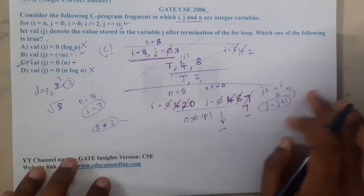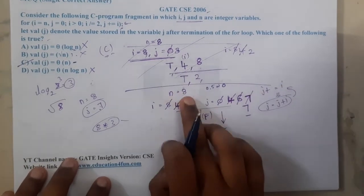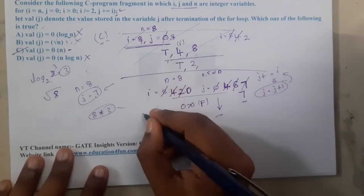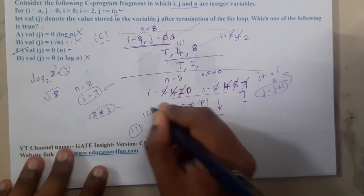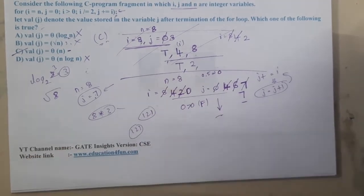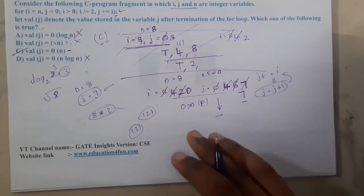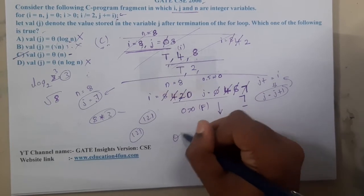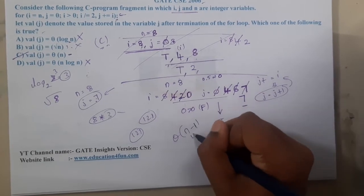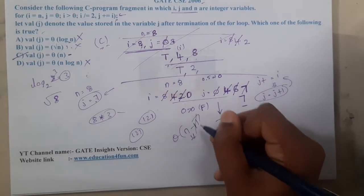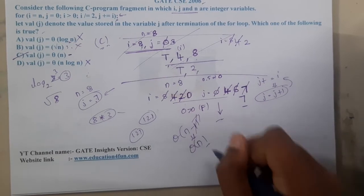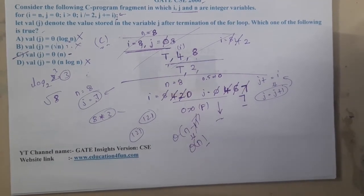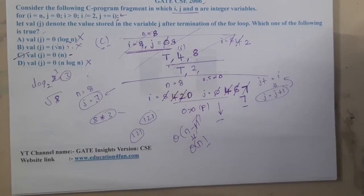Let me cross-check: yes, C is the correct answer. With n equal to 8 we got j equal to 7. If you take n equal to 128 you will get j equal to 127. So the relation is always n minus 1. Since n minus 1 is approximately theta of n (the constant doesn't matter), the answer is theta of n — that's option C.